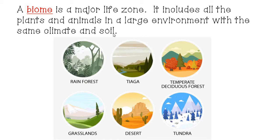A biome is actually bigger than an ecosystem. It's a huge chunk of land and biomes can span different continents that all have similar climates, meaning similar temperature and precipitation, as well as the same soil. For example, the temperate deciduous forest is the biome we have here in Virginia. Within a biome, you can have different ecosystems — like a wetland, a pond, or an alpine forest up on a mountain. Those individual ecosystems together make up a biome.